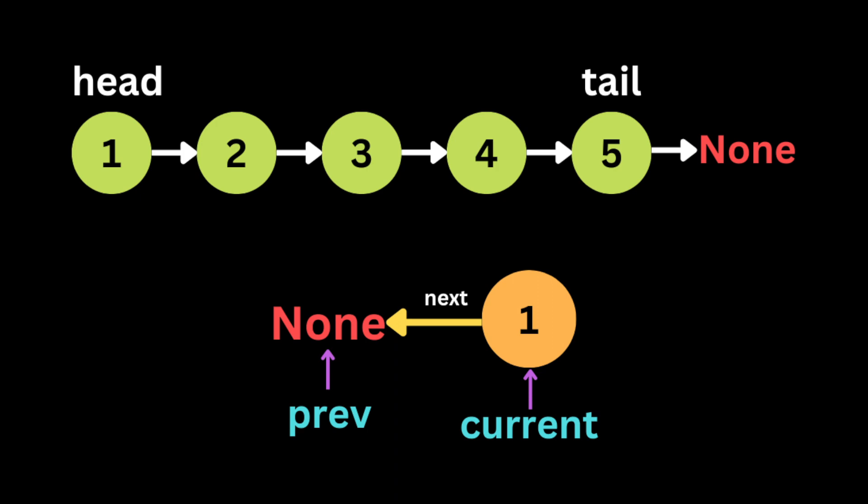The first variable is going to be 'previous,' and we assign its value to be null. The second variable is going to be equal to the head of the node — meaning the first node. Then we're going to start iterating throughout the linked list.